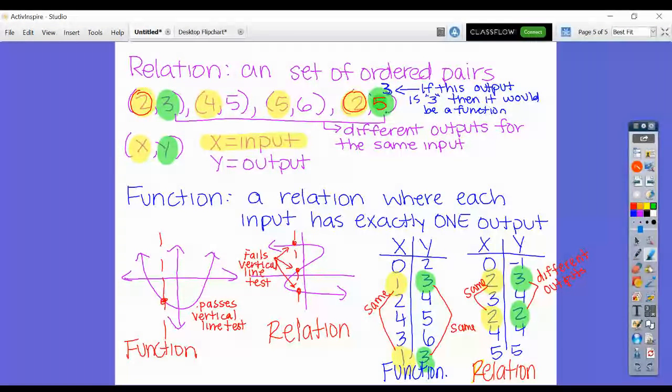For a relation to be a function, each input has exactly one output. For this relation to be a function, if this last ordered pair where it gave me a 5 were to be a 3, then it would be a function. Because when I put in 2, I get 3, and when I put in 2 again, I would get 3. But it's not, because it gives me a 3 the first time and a 5 the second time. Since they have the same input with different outputs, it is not a function, and it is just a relation.